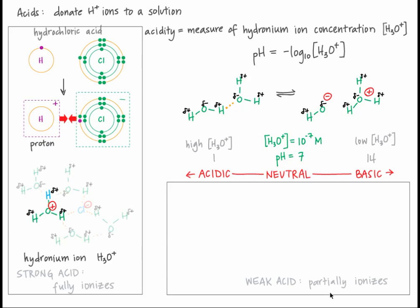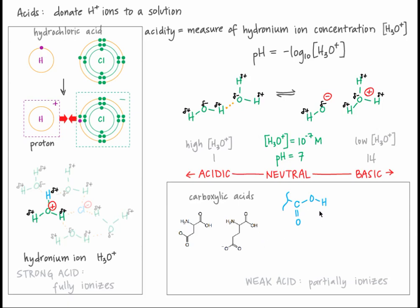Many acids found in the body are weak acids, which less readily give up H-plus ions and thus less readily ionize. For example, carboxylic acids, which are found on some amino acid side chains as well as the C-terminus of all polypeptide chains, are weak acids. In water, some carboxylic acids give up H-plus to water, but others keep the hydrogen ion interacting with the carboxylic acid.